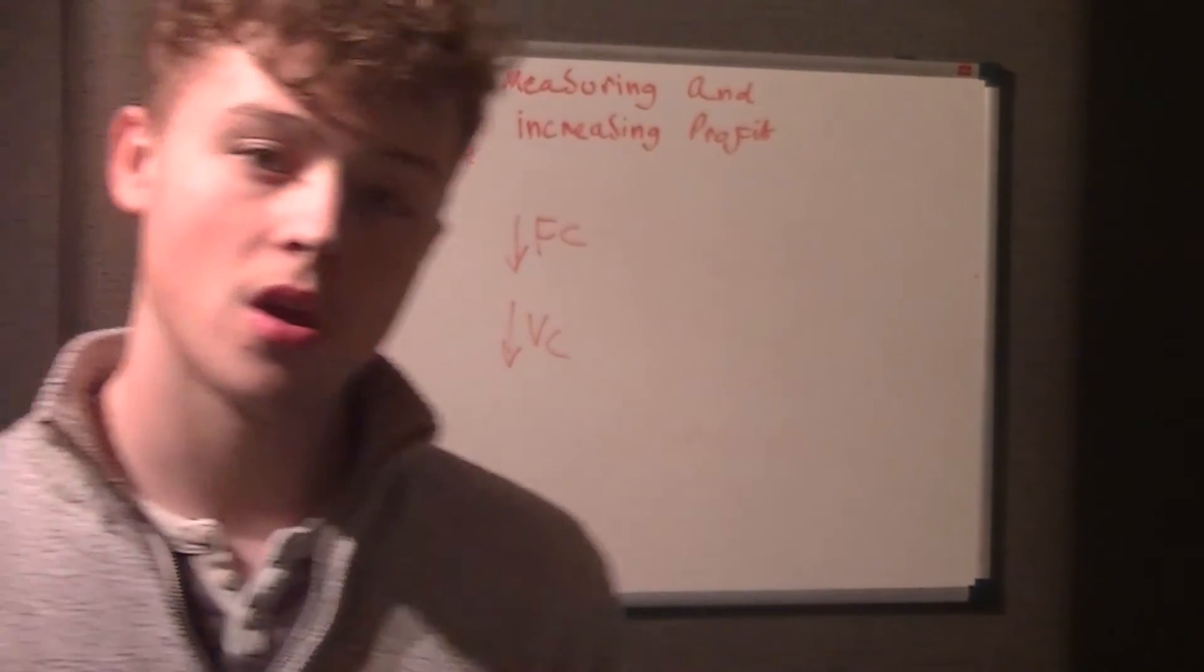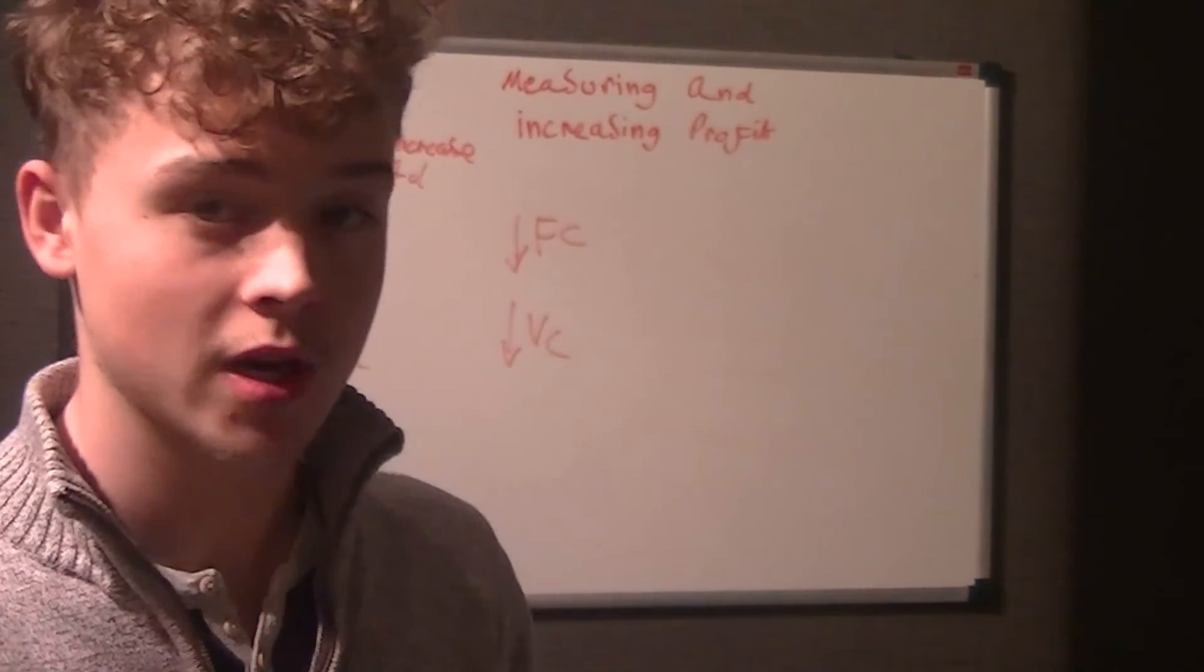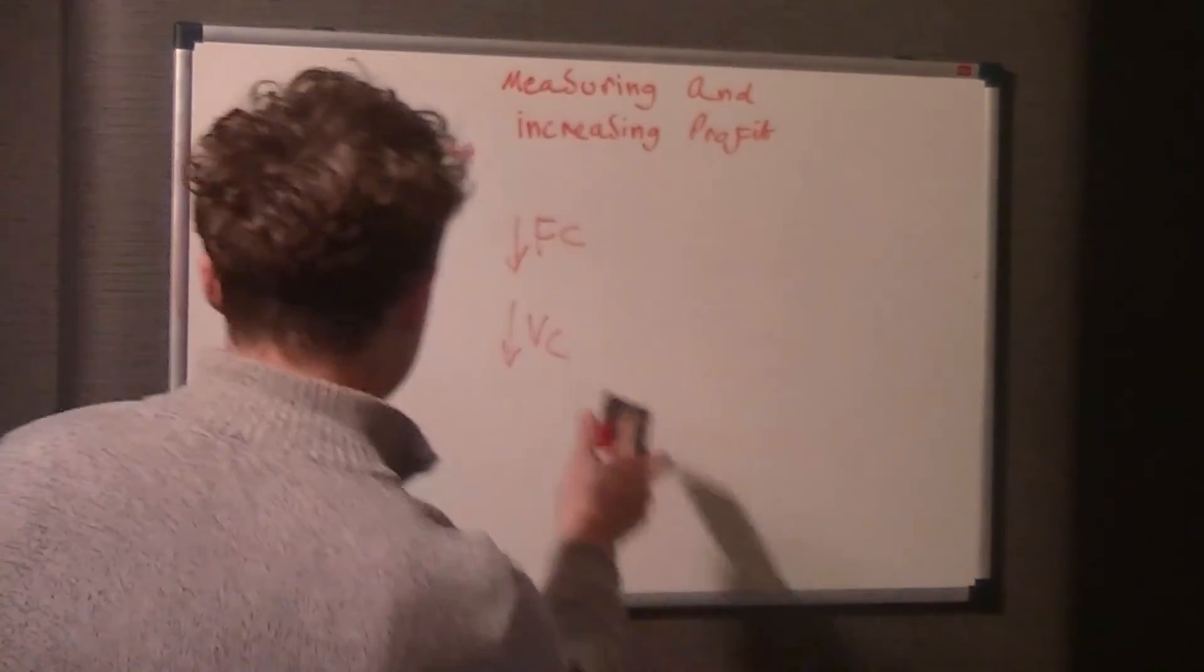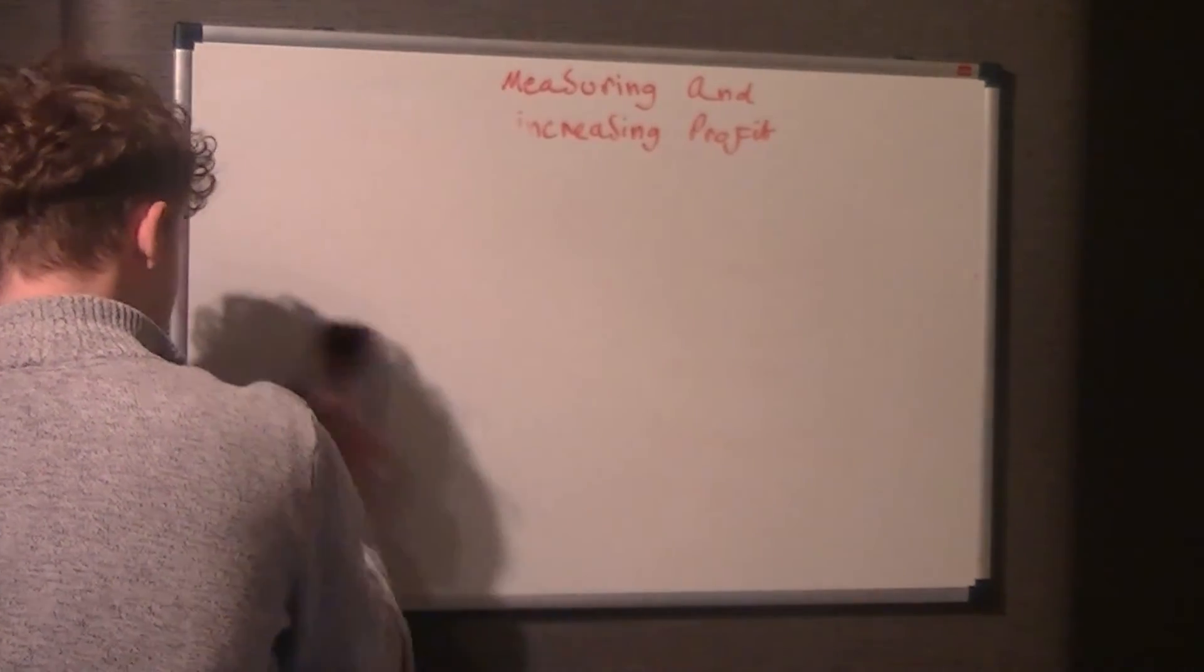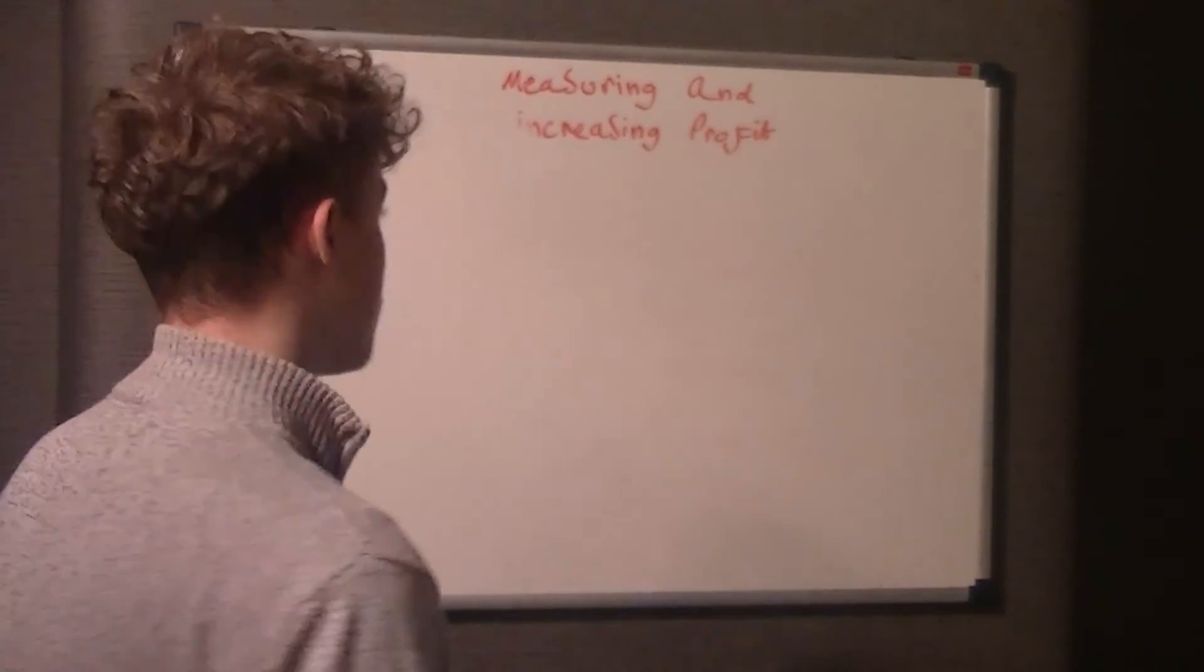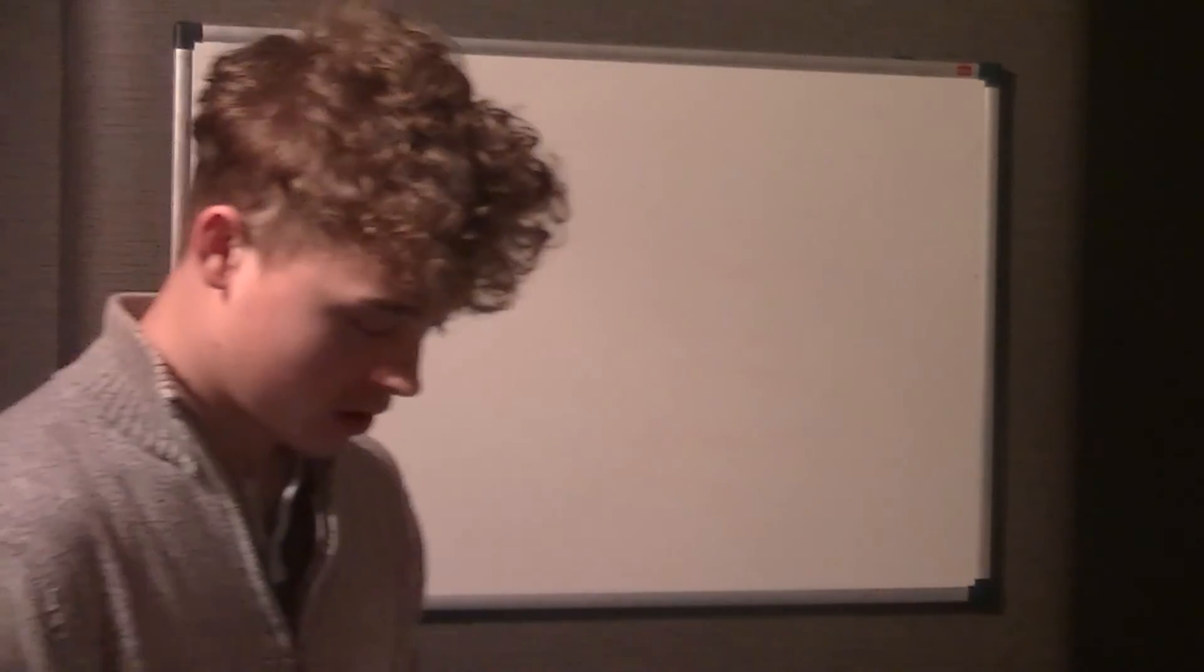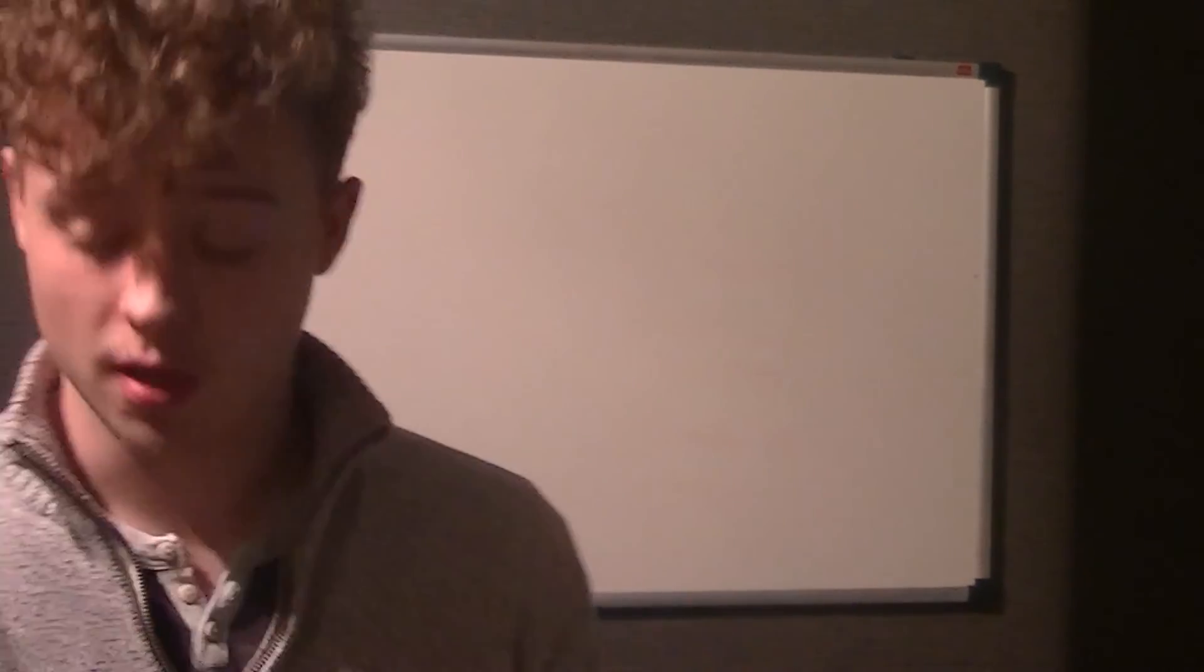Variable costs, if you reduce the materials, obviously it's going to impact on the quality that people experience. Word of mouth and that would lead to you losing customer satisfaction and sales and profit. So that's basically the measuring and increasing profit in a nutshell. There are certain definitions, but I just wanted to get you through the basics of it. As I said, there's not that much to measuring and increasing profit. I hope you got it from that and we'll look forward to seeing you in the next video.